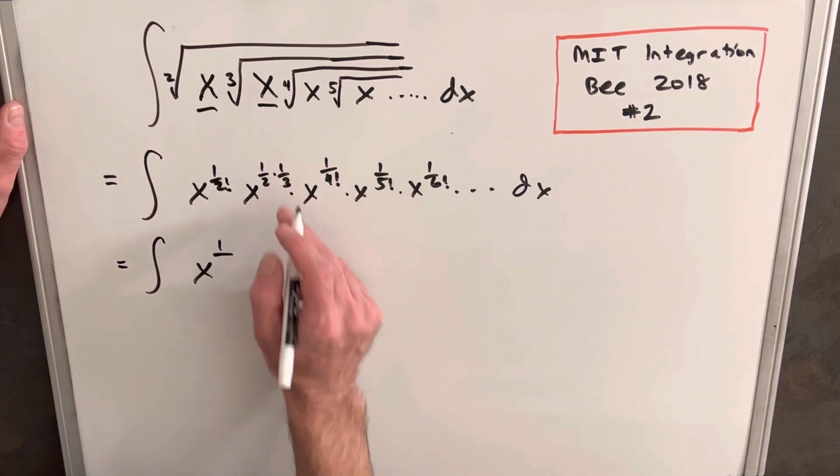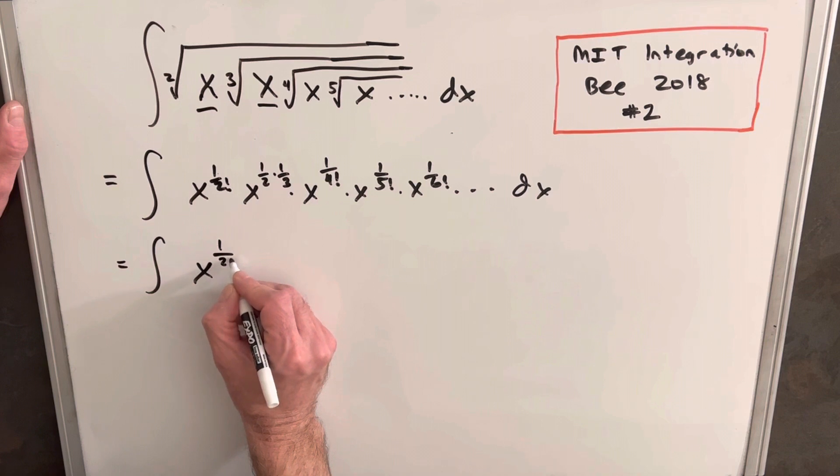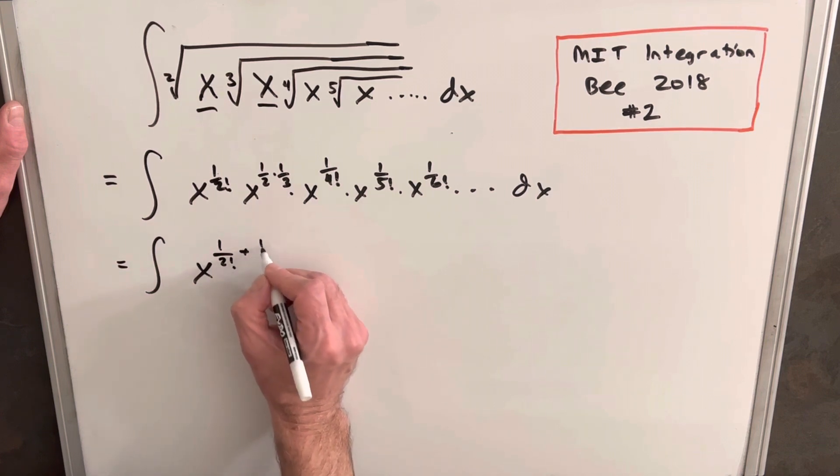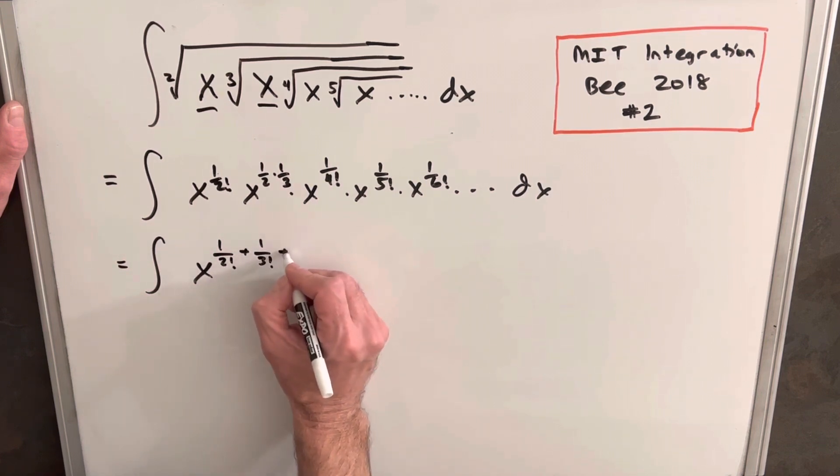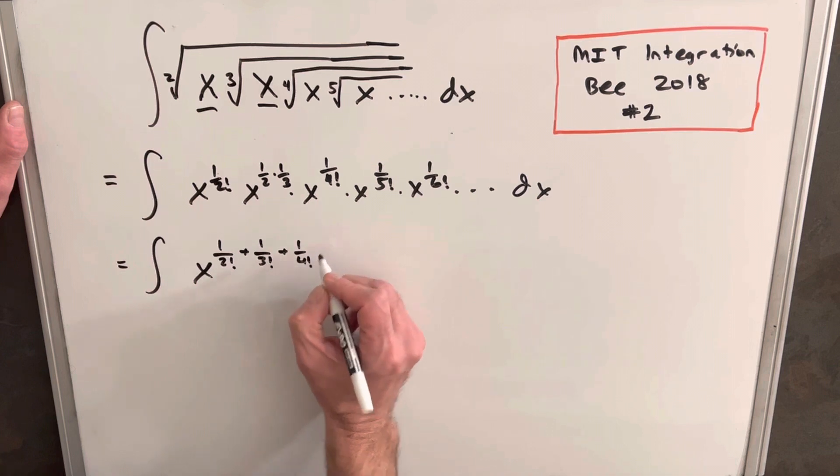We'll write the next one as one over three factorial, so this exponent is going to be one over two factorial plus one over three factorial plus one over four factorial.